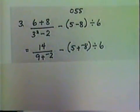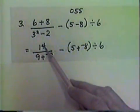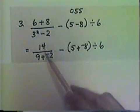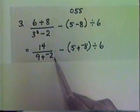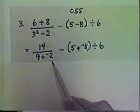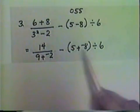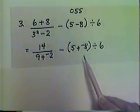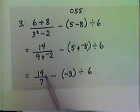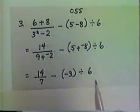Now let's finish what's in the symbols of inclusion. We have finished what's in the first one. The 14 is it. And the next one we have 9 plus negative 2. 9 plus negative 2 is 7. And in the third one, 5 plus negative 8 is negative 3. And so we get 14 over 7, subtract negative 3, divided by 6.